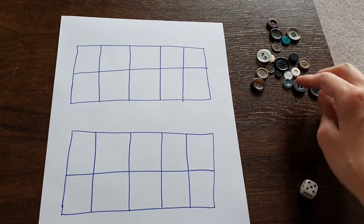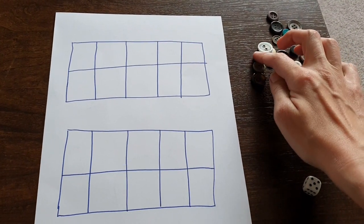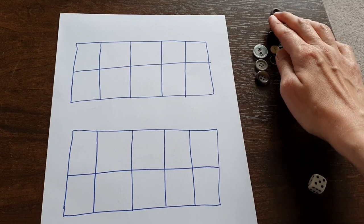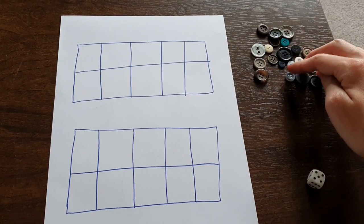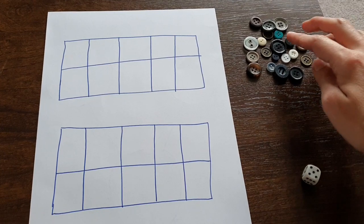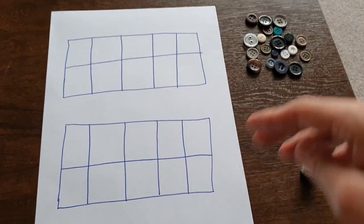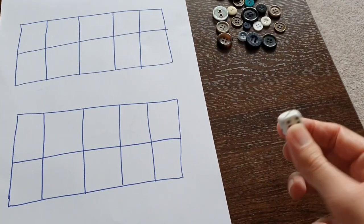Some counters and you'll need at least twenty counters each. If you can't find counters you could use bits of Lego or pasta or something like that, raisins as long as you don't eat all your counters, and you need a dice.